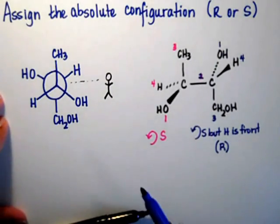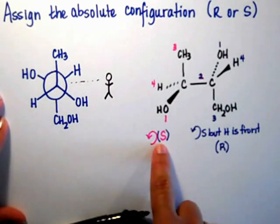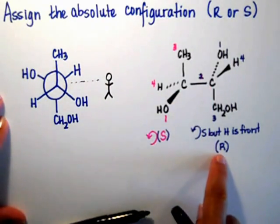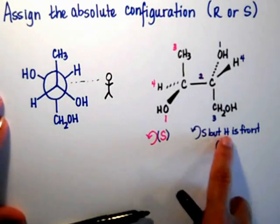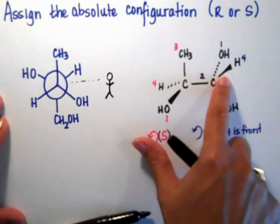So in this molecule right here, I have two chiral centers. The chiral center on the left is S. The chiral center on the right is R. Now remember, I can only use this track right here, the opposite track, if the hydrogen is on the wedge.